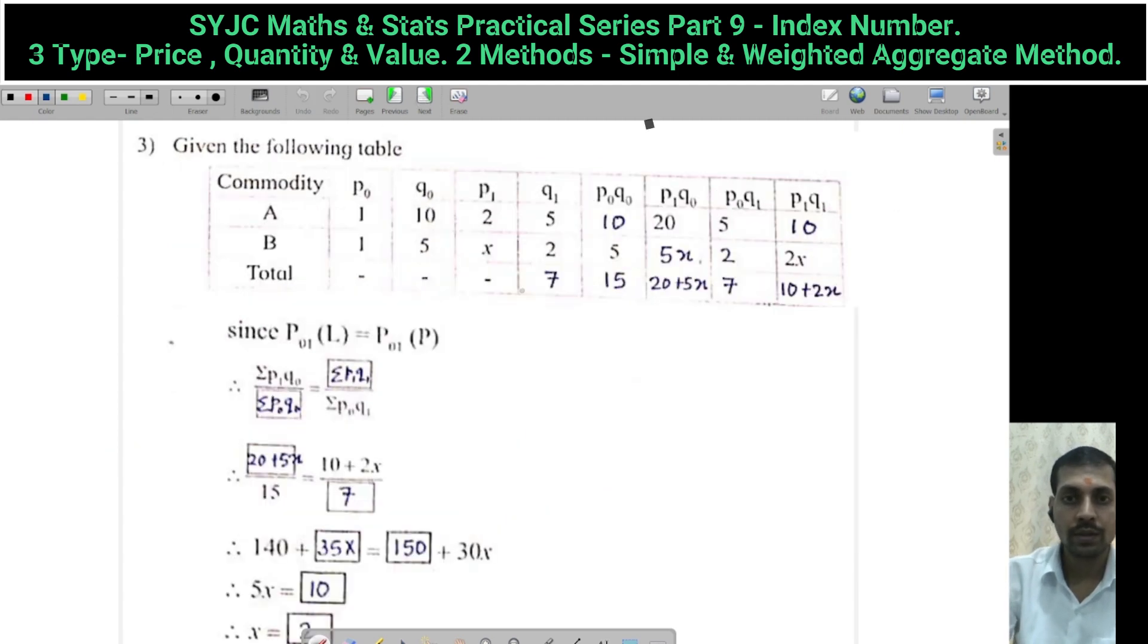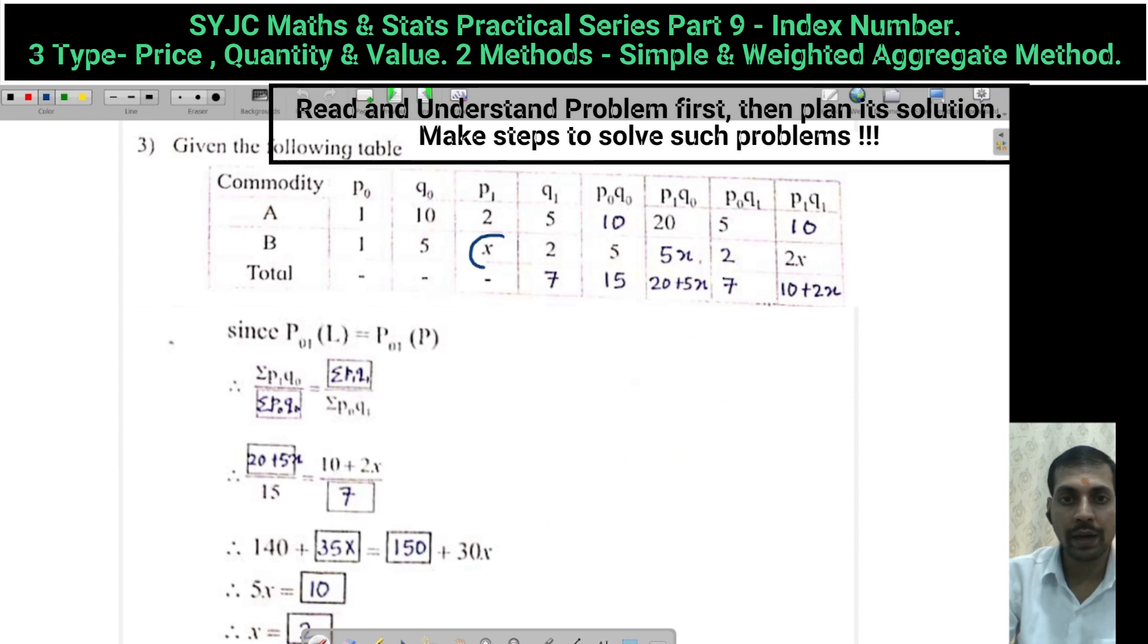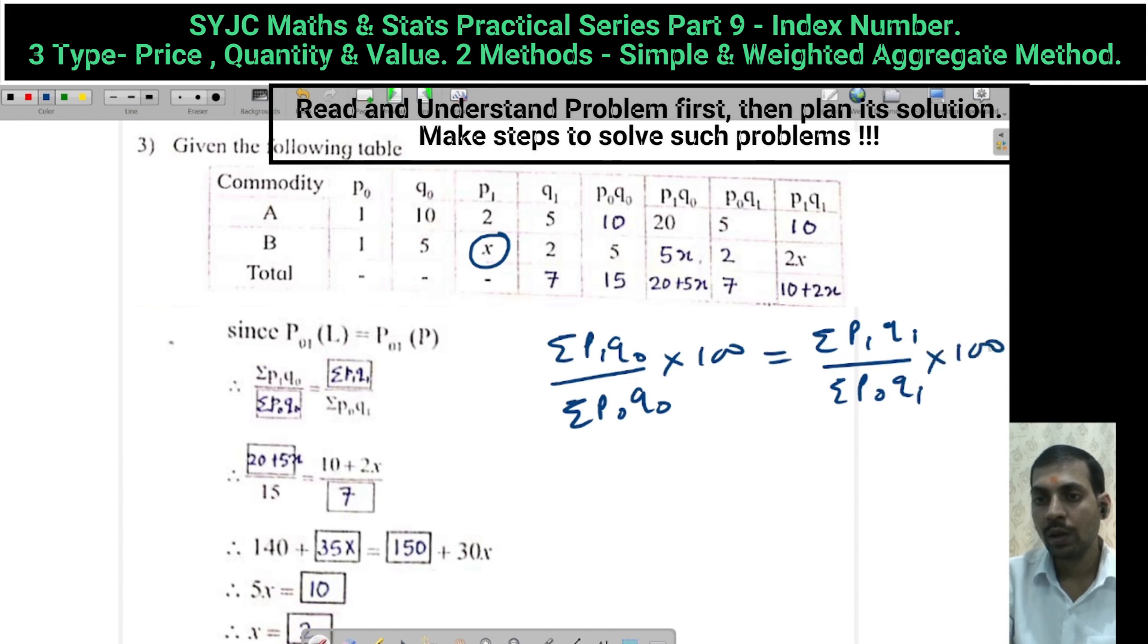Next, unknown value X. Given: Laspeyres index number equals Paasche index number. Laspeyres formula: summation P1Q0 upon summation P0Q0 into 100, which equals summation P1Q1 upon summation P0Q1 into 100. Both sides 100 cancels. Calculate totals, substitute and solve. We get value of x equal to 2.